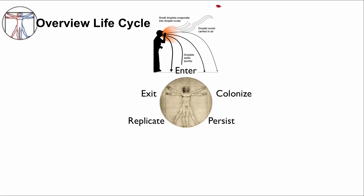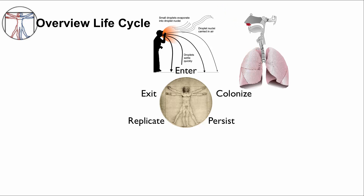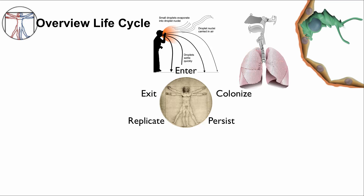The next step is colonize. MTB does not colonize the upper airway, but has to reach alveoli. Droplet nuclei are very small and more easily reach the alveoli compared to large droplets that are trapped in the upper airway. Each droplet nuclei contain around one to three MTB bacilli. Once the droplet nuclei containing MTB is in the alveoli, patrolling alveolar macrophages engulf the bacilli. Although MTB bacilli are phagocytosed by alveolar macrophages, they don't all die.